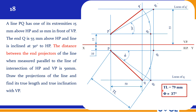Measure the true length and write the answer. I am getting 79 mm as the true length and the φ angle is 37 degrees. Please cross-check this answer and let me know.